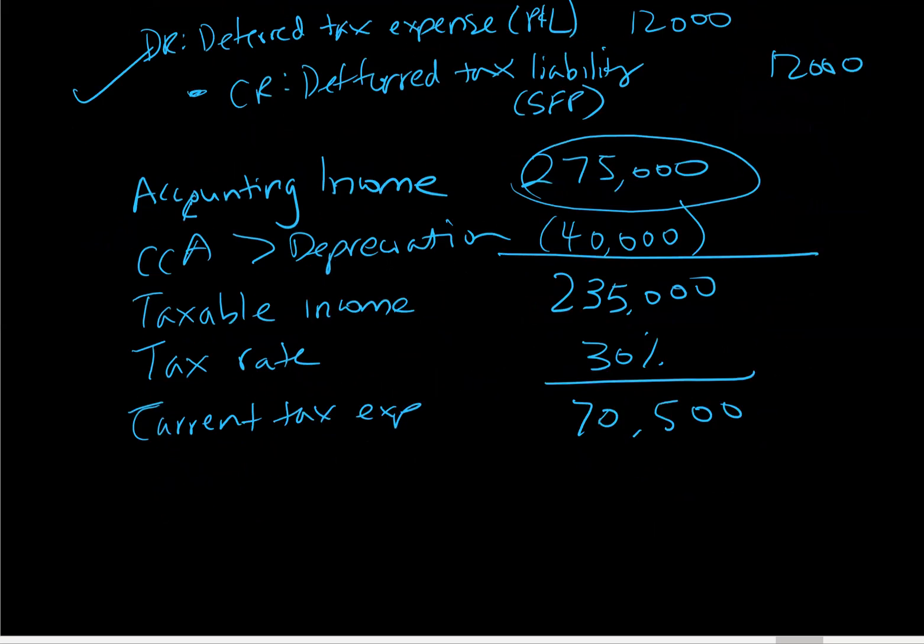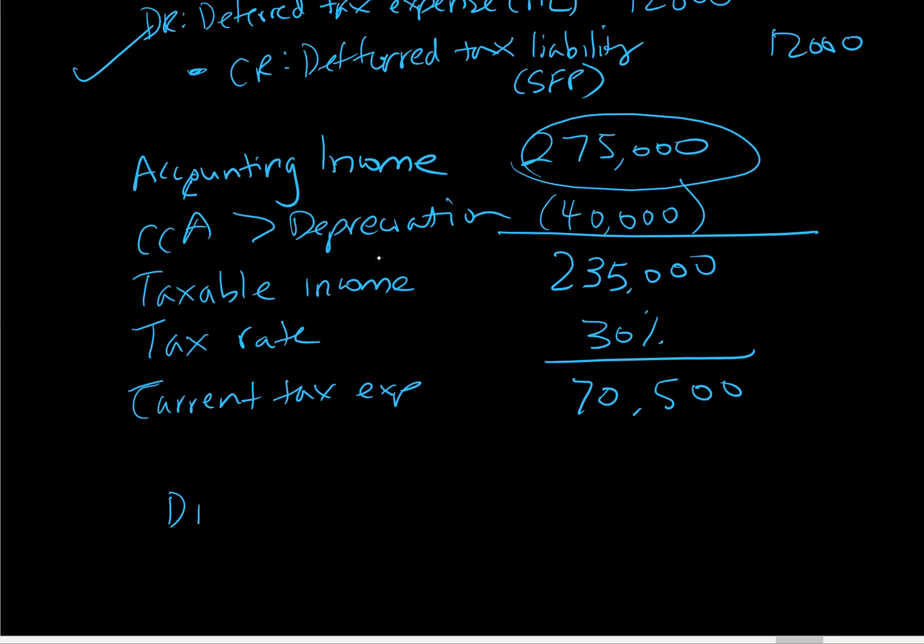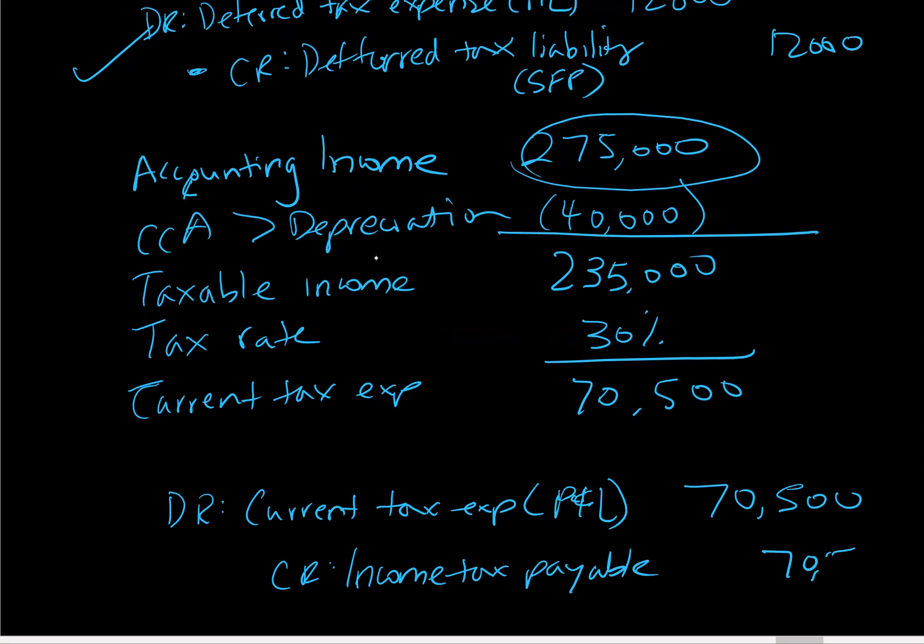So our journal entry to report that is going to be debit current tax expense. And this is also going to go through our income statement, $70,500. And then credit income tax payable for the same amount. And that takes us through both of those two journal entries. Thank you.